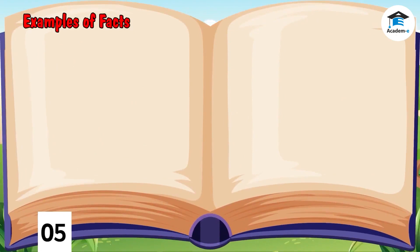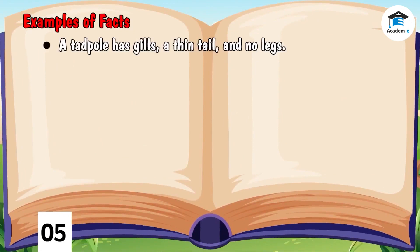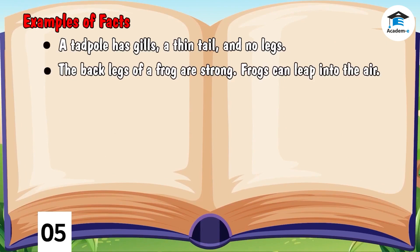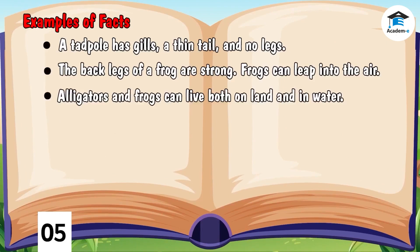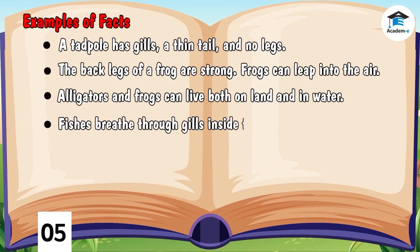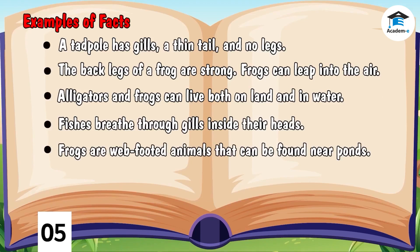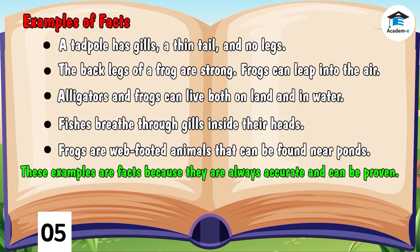Take a look at the following examples. A tadpole has gills, a thin tail, and no legs. The back legs of a frog are strong. Frogs can leap into the air. Alligators and frogs can live both on land and in water. Fishes breathe through gills inside their heads. Frogs are web-footed animals that can be found near ponds. These examples are facts because they are always accurate and can be proven.